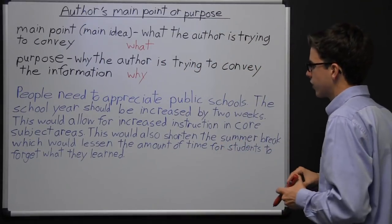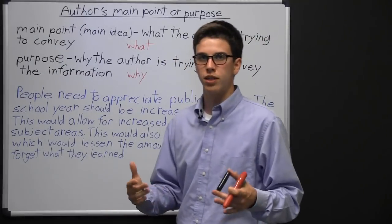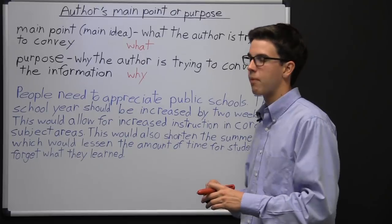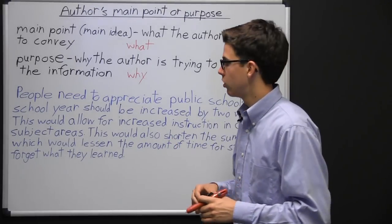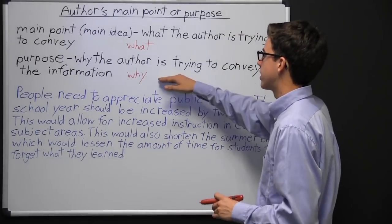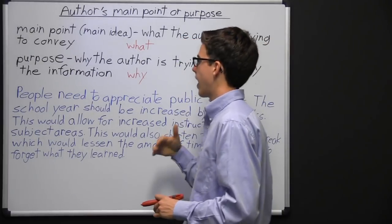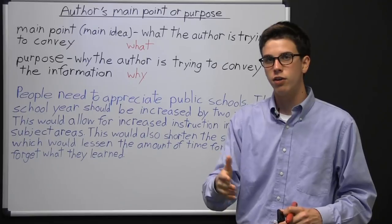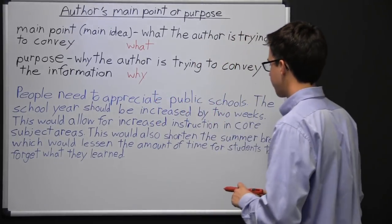An example: an author's main point could be that yellow lights should be longer. Their premises, or what backs up that belief, is that longer yellow lights will save lives through reduced traffic accidents. The purpose — the reason the author would share this main point and the evidence behind it — is to make you also believe that yellow lights should be longer. That's just an elementary example.